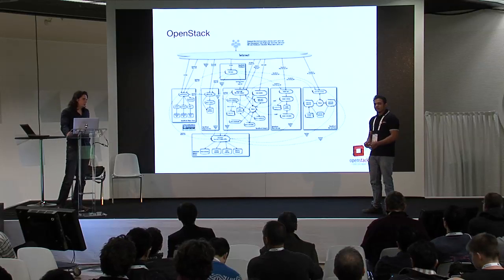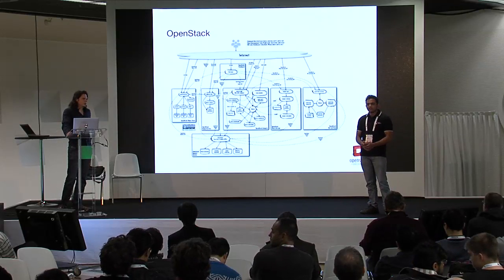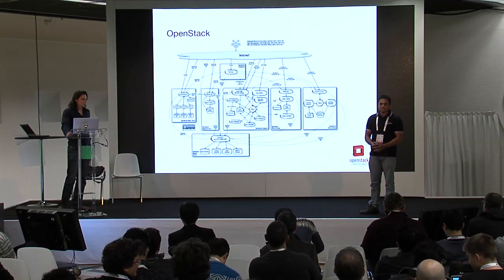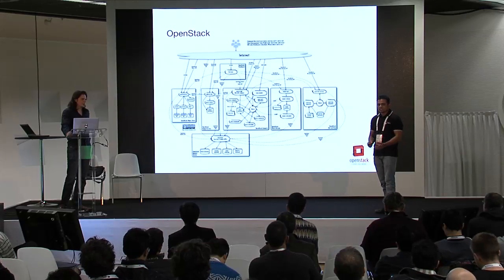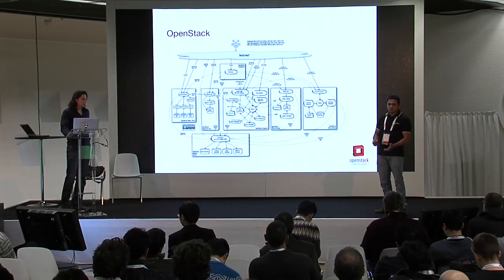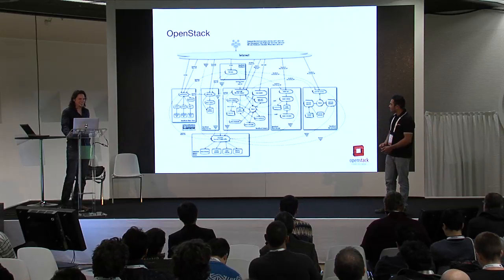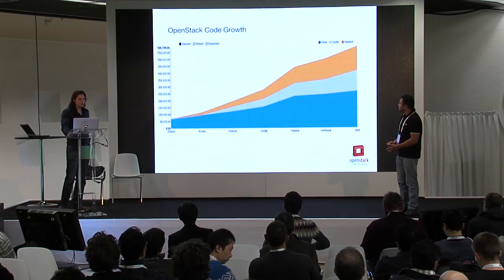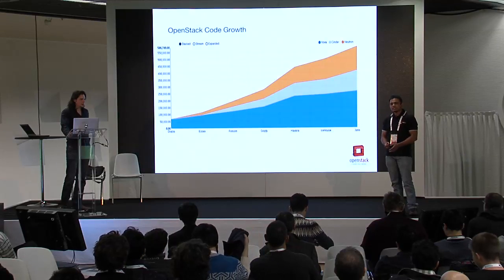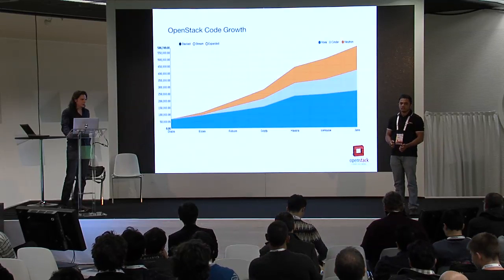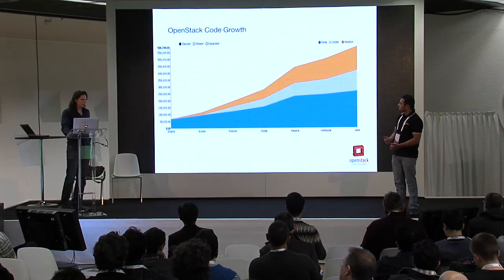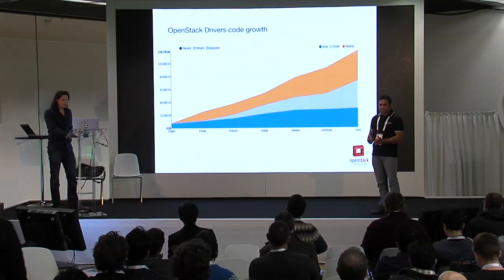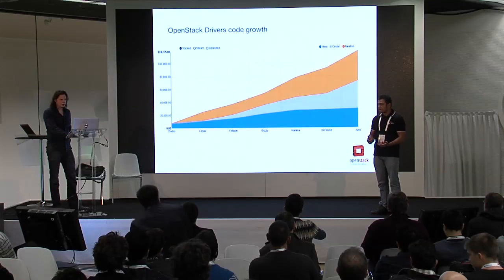OpenStack, as we all know, is a really, really huge and complex ecosystem. Nobody knows how it works — there are big services, lots of projects and lots of services. Even I don't know how it works. Going by the numbers, OpenStack has experienced significant code growth, the majority of which has been driver code, which is a really scary part because driver code is increasing every cycle.